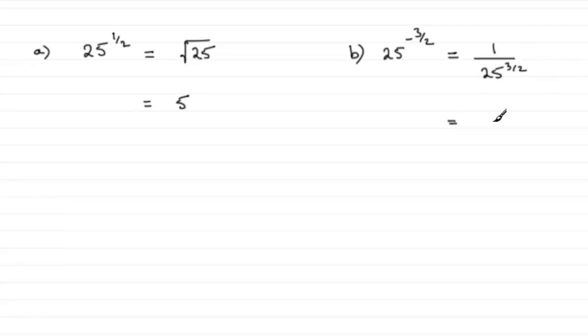So what do we mean by 25 to the power of 3 over 2? Well, the 2 tells us it's the square root of 25 and then we just cube that result because of that 3 there. So, square root of 25 we know then is 5.